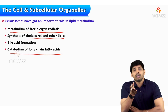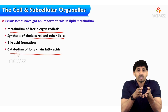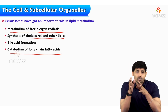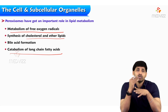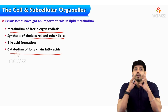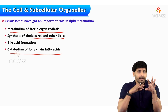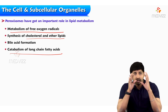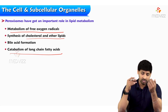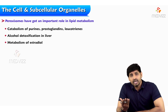Peroxisomes also perform catabolism of long chain fatty acids. There are different types of fatty acids based on the number of carbons and chain length. Short chain fatty acids have four to five carbons, medium chain up to twelve carbons, and long chain more than twelve carbons. Small chain and medium chain fatty acids are catabolized inside the mitochondria, but in case of long chain fatty acids, peroxisomes are the subcellular organelle where this metabolism takes place.